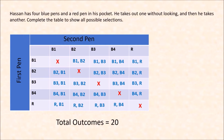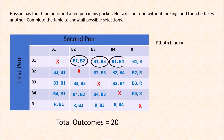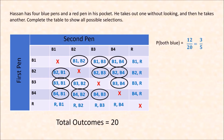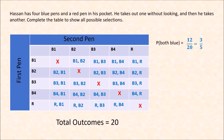If you want the probability that both are blue, we count: 1, 2, 3, 4, 5, 6, 7, 8, 9, 10, 11, 12. There are 12 possibilities where Hassan selected both blue pens. So that's 12 out of 20, or 3 fifths.